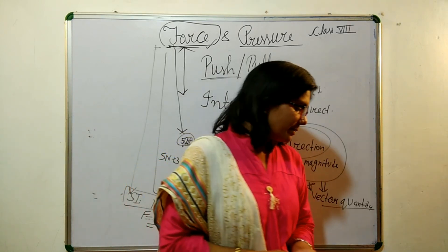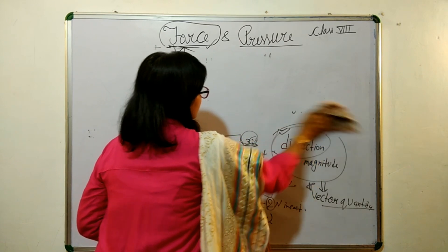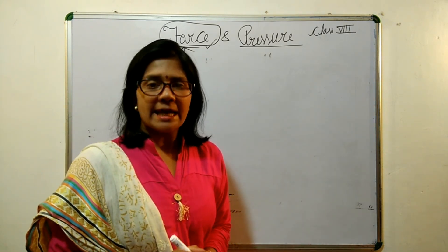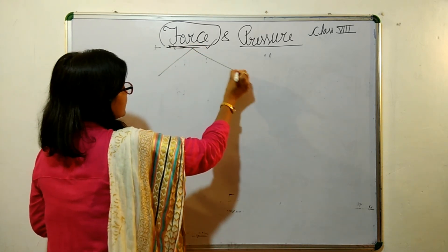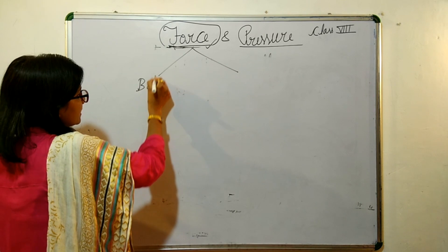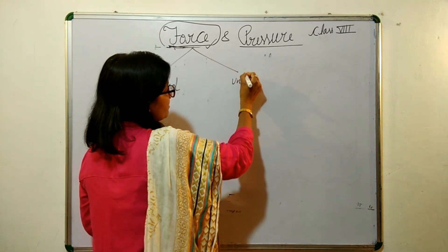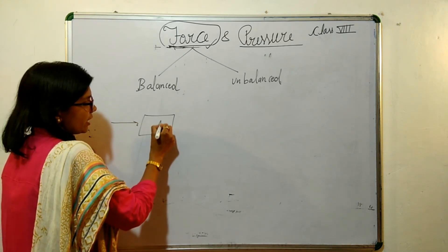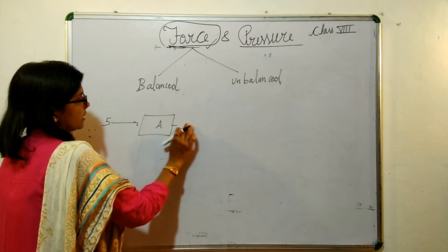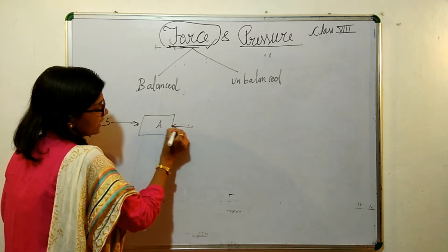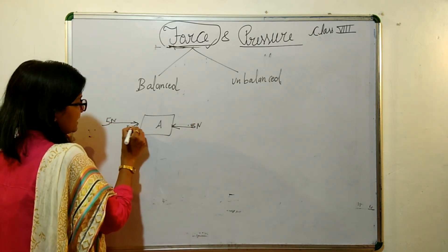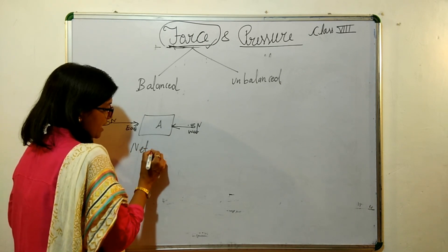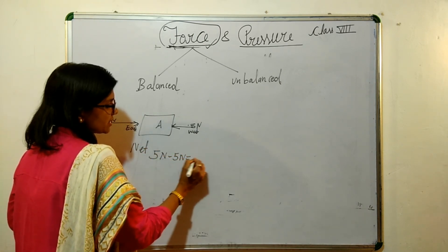Now let's see what is balanced and unbalanced force. Suppose it is object A and we are applying a force of 5 newton in the east direction and 5 newton in the west direction. What will be the net force? Net force will be 5 newton minus 5 newton, which is equal to zero.